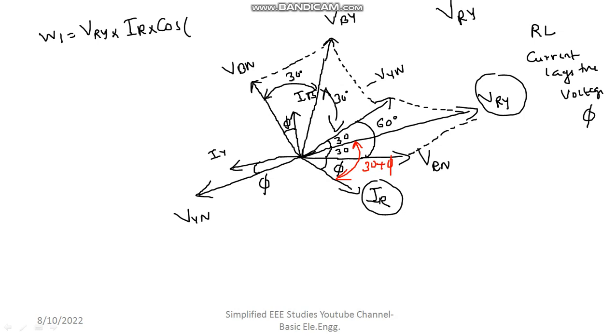Likewise the angle between VBY and IB. This angle. How much is it? So total 30. This portion is φ. Then remaining portion will be how much? 30 minus φ. I will tell you at the time when I am going to write W2. Time being let me continue this.